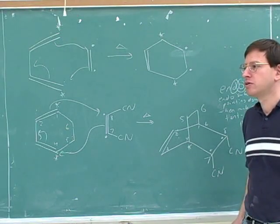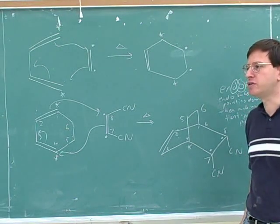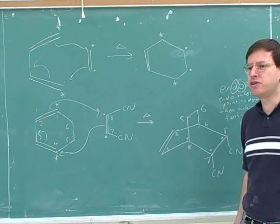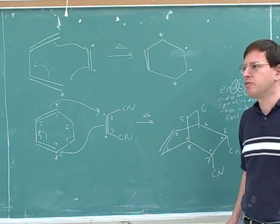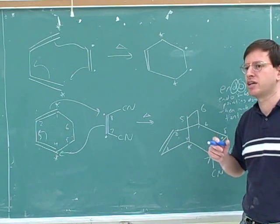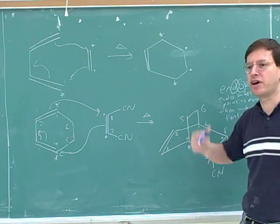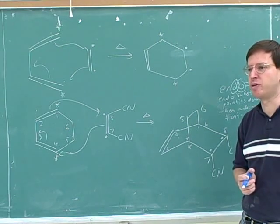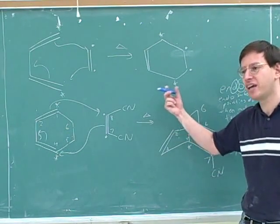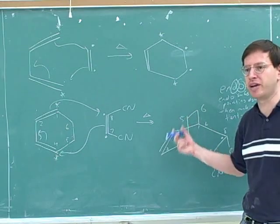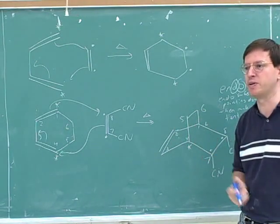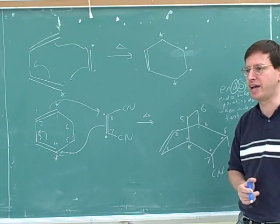That's a big clue for when you should use a Diels-Alder on a synthesis problem. Notice that Diels-Alder gives you a six-membered ring with a double bond. So if you're doing a synthesis problem and you see that the product has a six-membered ring with a double bond, that's a strong clue, especially for this next midterm, that you're supposed to use a Diels-Alder reaction.